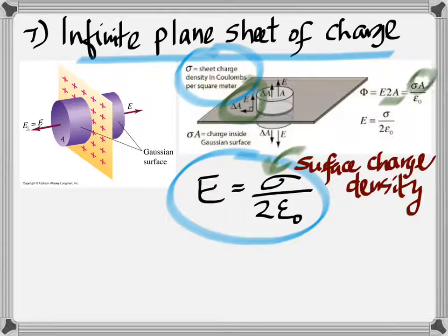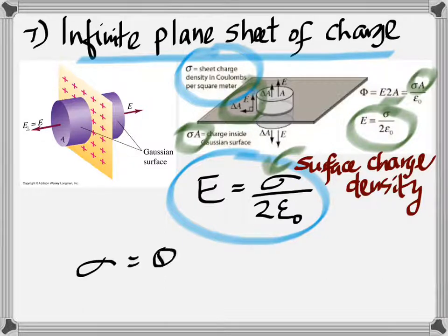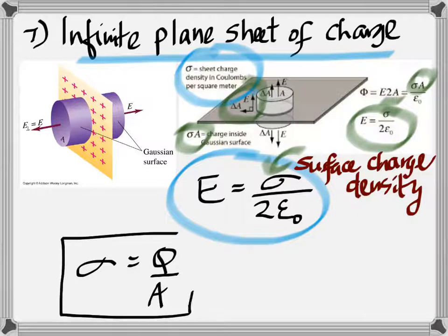And Q is sigma A by the definition of sigma as Q by A. And so when you put all that together, you get a very important result, which is sigma by 2 epsilon naught. Again, remember that epsilon is defined as Q divided by A. And it's called the surface density of charge. And its unit is coulomb per meter squared.